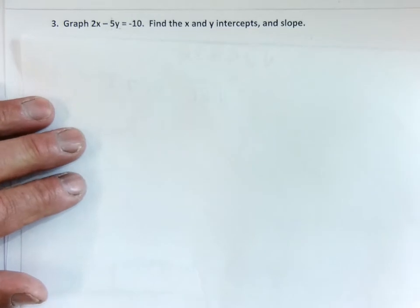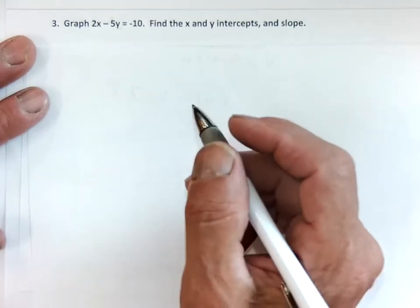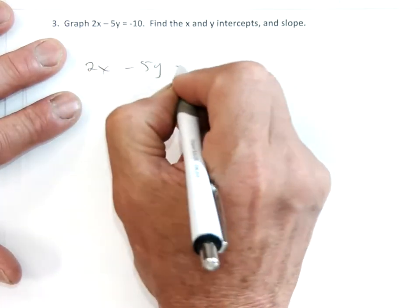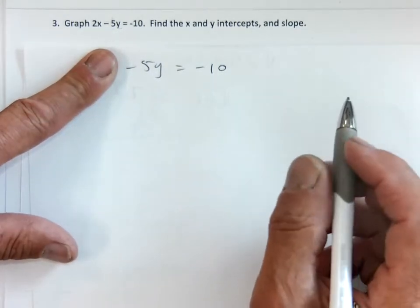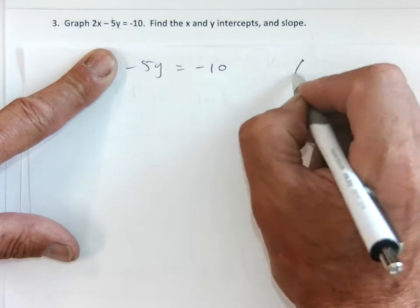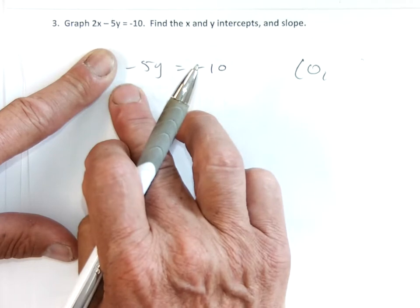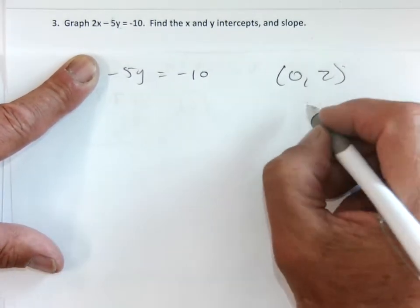X intercepts and y intercepts. Let's just do the zeros, right? So if I've got 2x minus 5y equals negative 10. If I cover up the x, it's like making the x 0. So it should give me a y intercept. I'd get a 0, 2. Do you guys see the 2? Divide by negative 5, divide by negative 5.